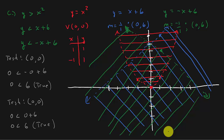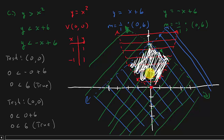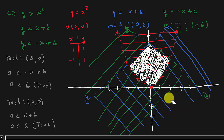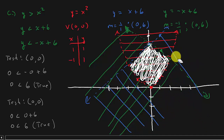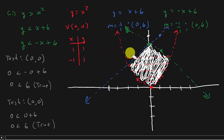The solution is where all three shaded regions intersect — that triangular region between the two lines and above the parabola. It gets kind of messy with three graphs, but you get the idea. Shade that part and erase what's left over.